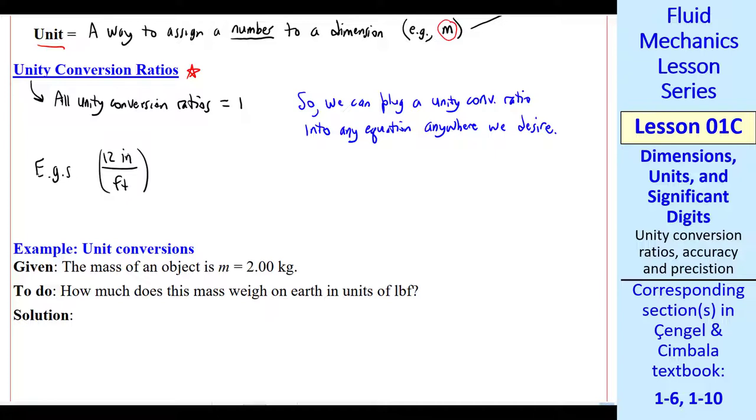Some examples of unity conversion ratios. In the English system, 12 inches per foot, 60 seconds per minute, 1 kilogram per 2.2046 pound mass, Newton second squared per kilogram meter. All of these are equal to 1. 12 inches is equivalent to 1 foot. 60 seconds is equivalent to 1 minute. A kilogram is about 2.2 pound mass.